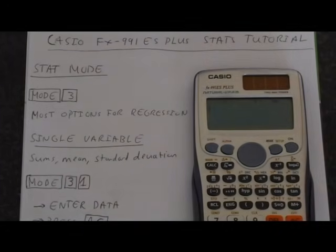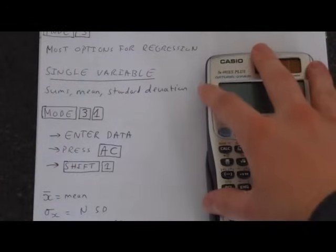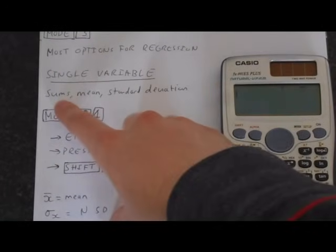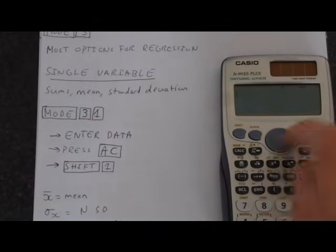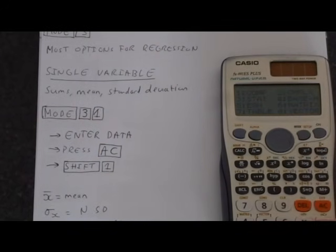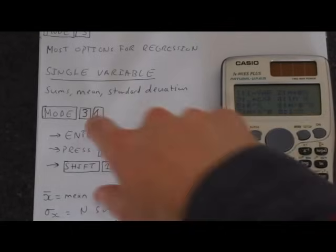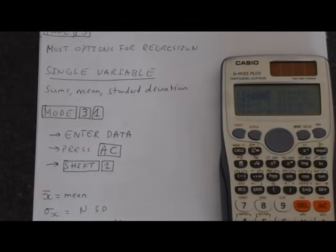Let's start by looking at single variable statistics. This is where we can do summations, find the mean and the standard deviation. To do this, we get into statistics mode, mode 3, and then select 1 for single variable. Then we could enter some data, let's just say 1, 2, 3, seems like a good set of data.